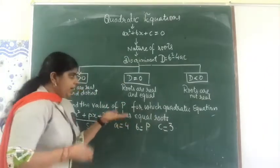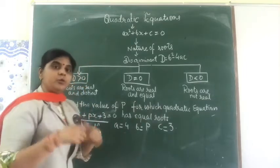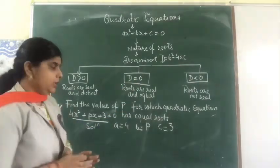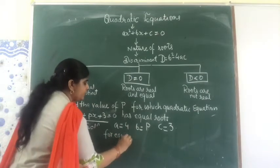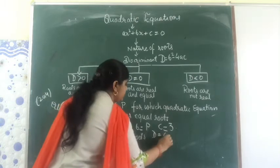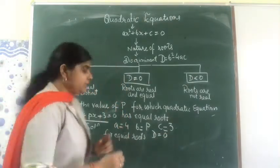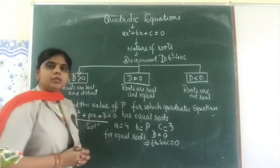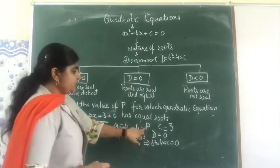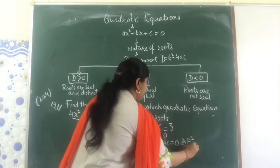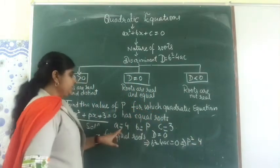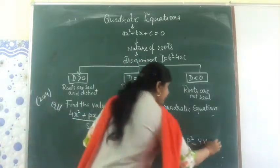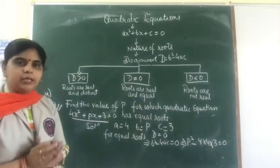Next step: we are given that the equation has equal roots. So what is the condition for getting equal roots? That D should be equal to 0. For equal roots, D = 0, which means b² - 4ac = 0. Now we will substitute the values: b² means p², so p² - 4 × a × c, where a = 4 and c = 3, should be equal to 0.